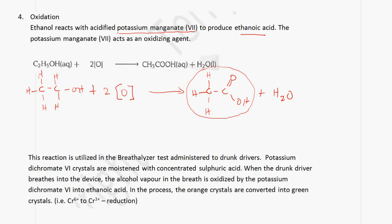Potassium manganate-7 is purple, and when it reacts with the alcohol it changes to a colorless solution. The potassium manganate-7 is an oxidizing agent, and when it acts as an oxidizing agent it is itself reduced. The purple color is due to manganese having an oxidation state of +7, and when it is reduced, its oxidation state changes to +2.